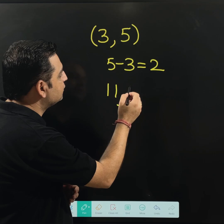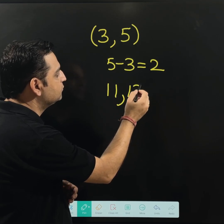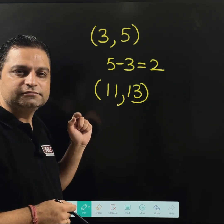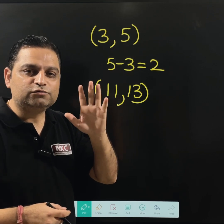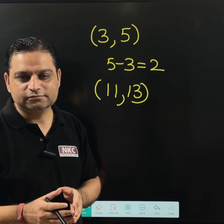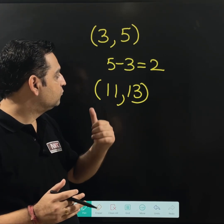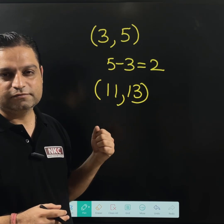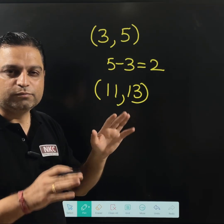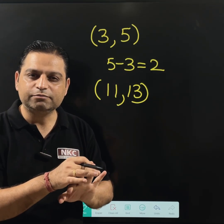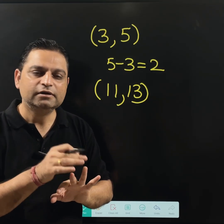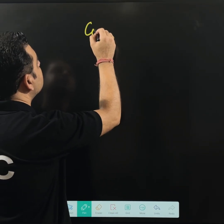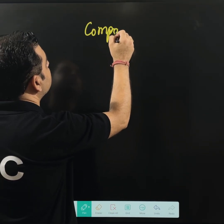One more example: 11 and 13 — this pair is also a twin prime. You can try out one more pair and let me know which next pair will make twin primes. I hope you are clear with the prime and twin prime concept. The last concept of today's video is composite numbers.